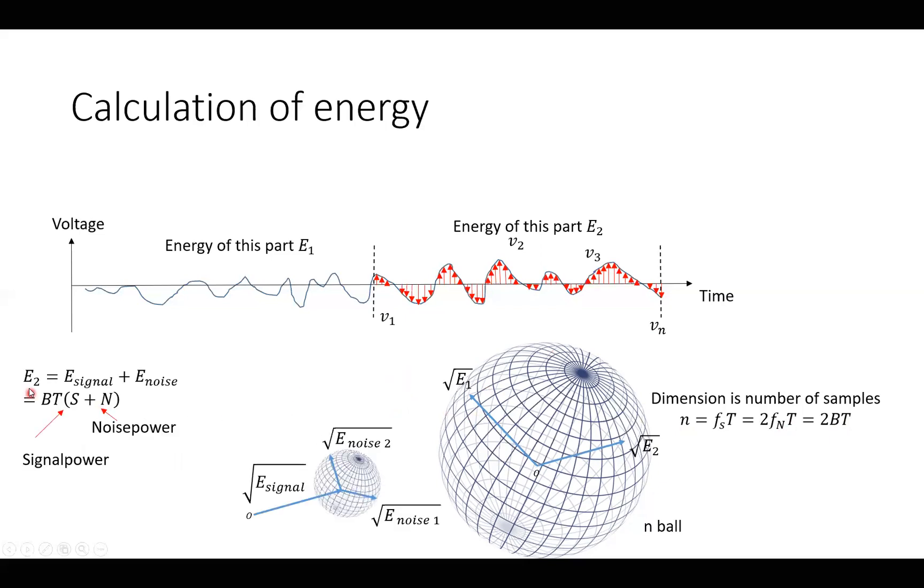And the E2, that is energy due to the signal and energy due to the noise. And if we write this as 2BT multiplied by S+N, we have the signal power and the noise power.